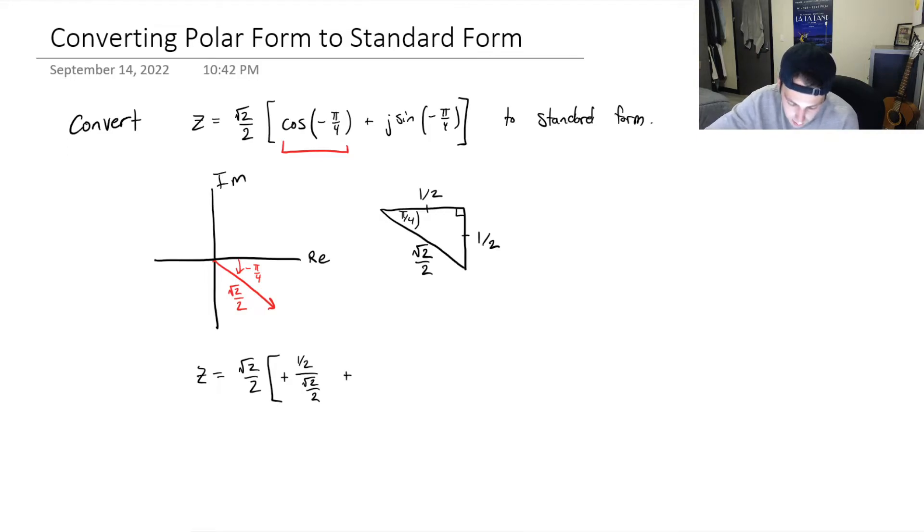Plus j times... now sine, since this is going down in the imaginary units, we know that it's going to evaluate to a negative. So let me change this positive to a negative now. And sine is just going to be opposite over hypotenuse. That's going to be half over √2 over 2.